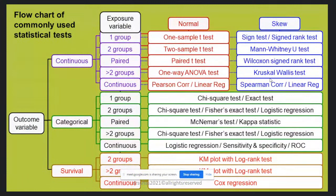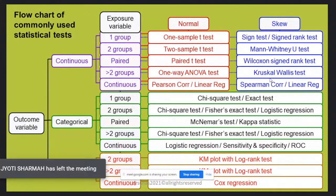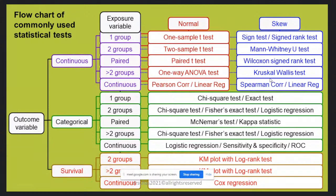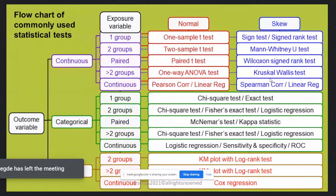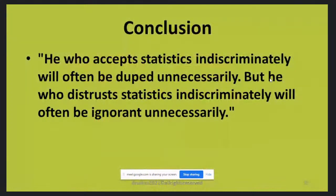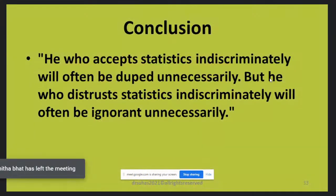It is very important to have a clear idea of your outcome variables and the type of data. If these two things are available, you can easily determine the appropriate test — whether one-way ANOVA, Mann-Whitney, Kruskal-Wallis, chi-square, or regression. For survival analysis with two groups, use a KM plot with log-rank test. For continuous survival data, use Cox regression. The type of data will always help you identify the most appropriate statistical test.